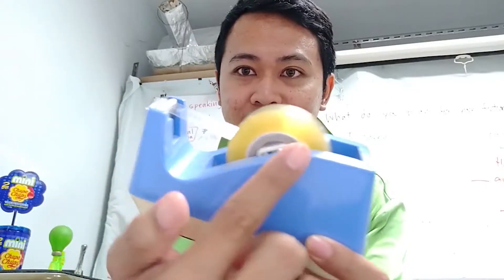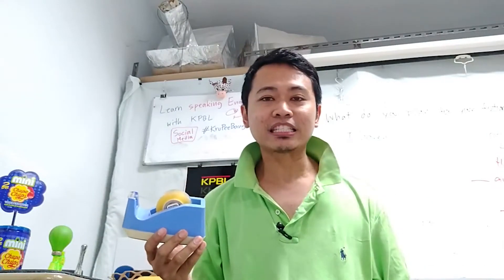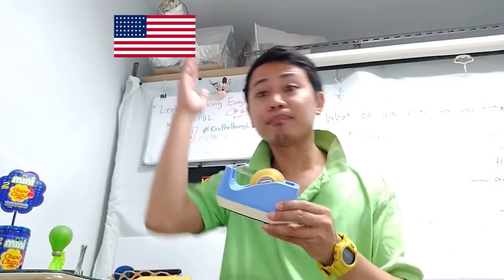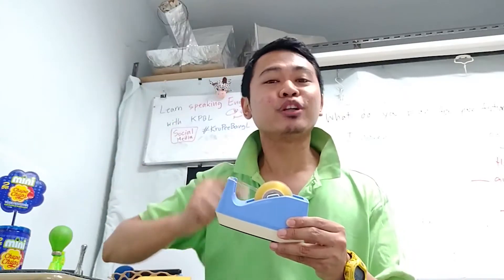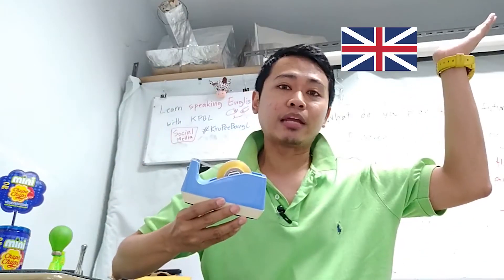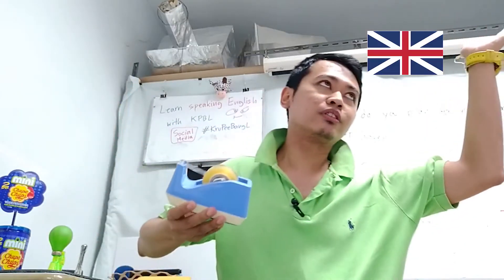This thing — scotch tape. We call it the same word in Thai: scotch tape. But scotch tape is American English, while British English calls it cello tape. Scotch tape, cello tape.